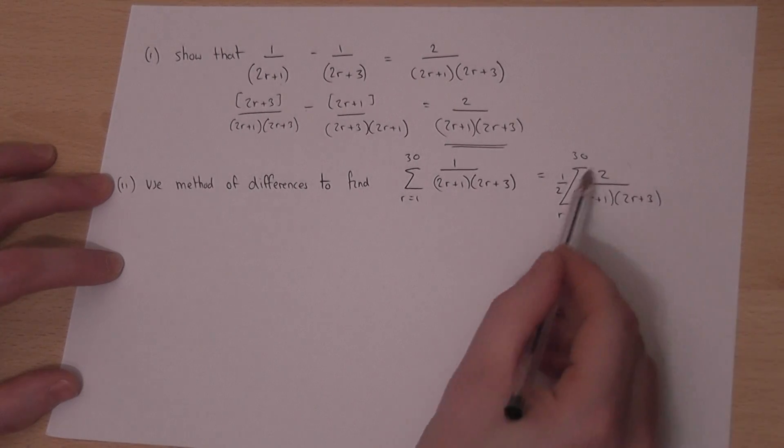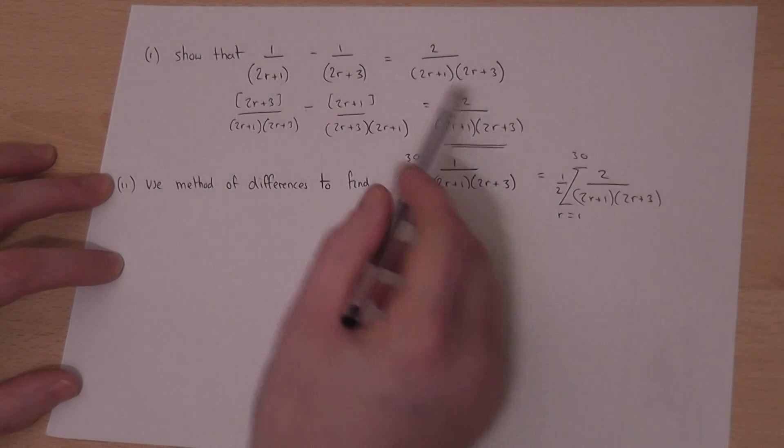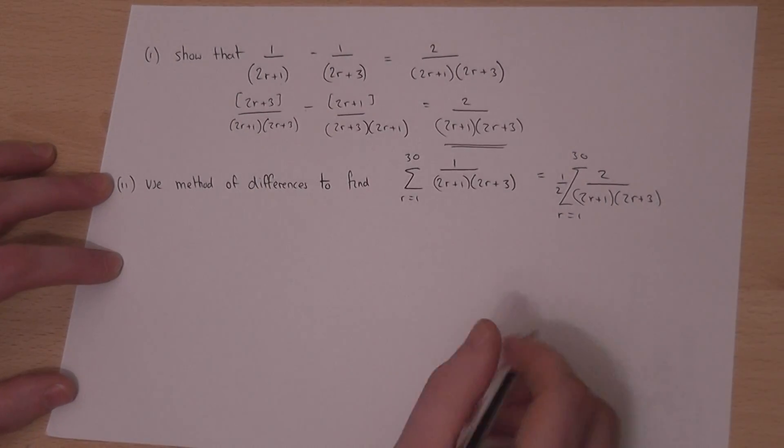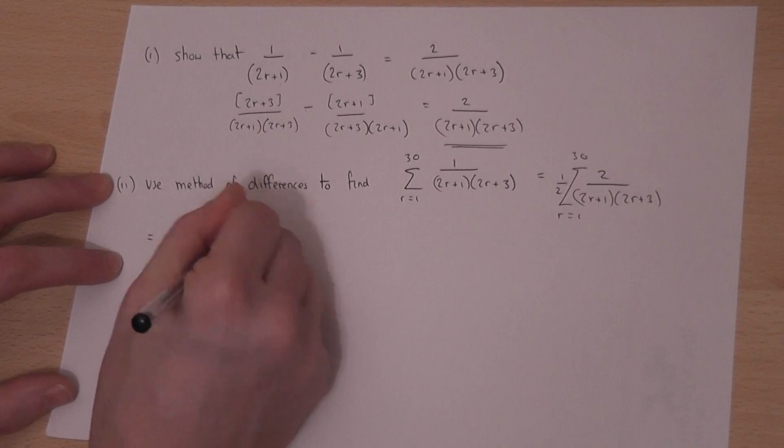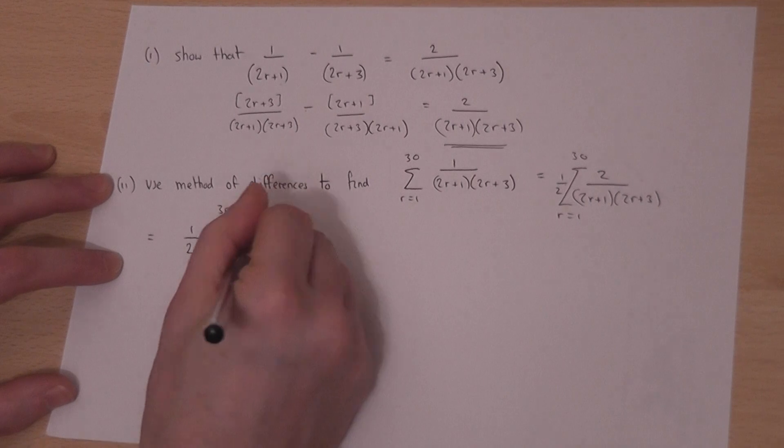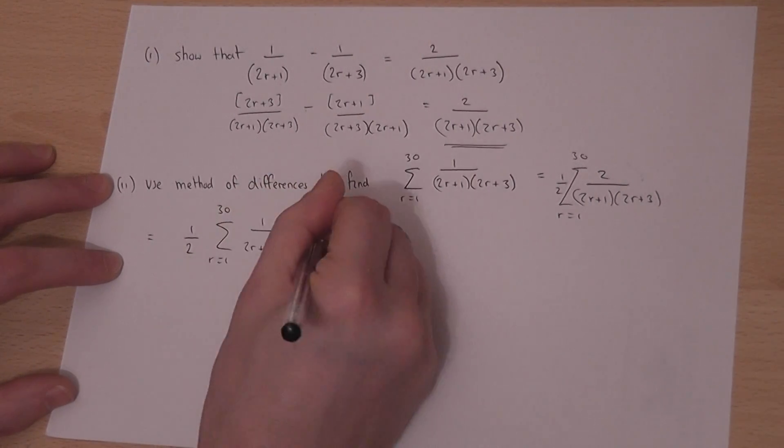I can then replace this part of the question with this because they're the same. So this becomes a half summation of r equals 1 to 30 of, rather than this expression, I've got a 1 over 2r plus 1 minus a 1 over 2r plus 3.